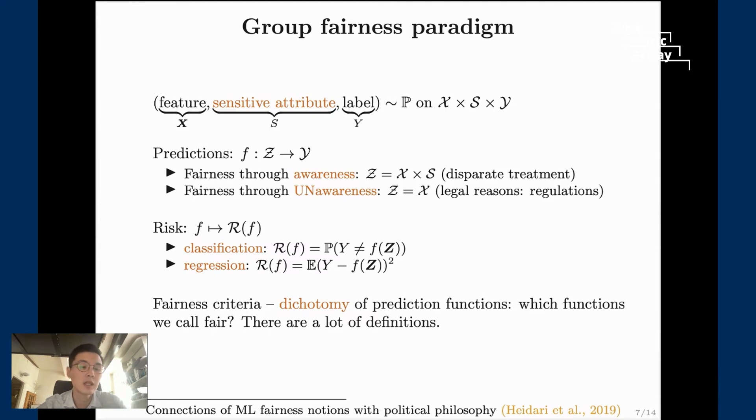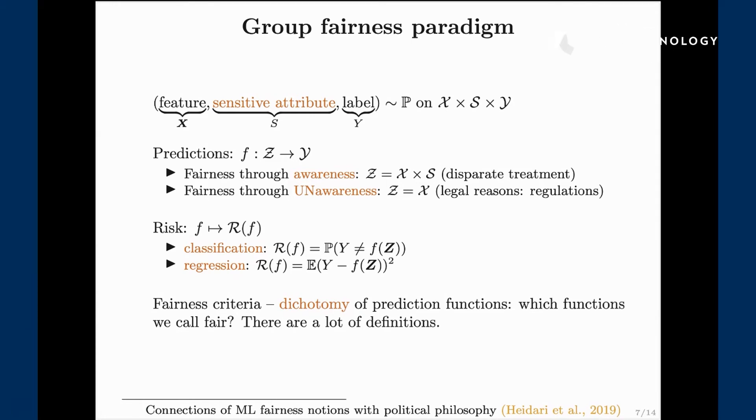The second thing to consider is the risk. Here we do not invent anything new. Typically we consider standard risks. If you talk about problem of classification it can be accuracy or the probability that we are making an error. In regression it can be a squared risk, and other typical choices of risks are also possible.